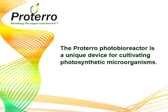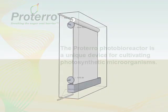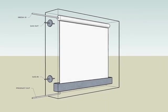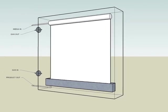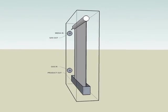The Protero Photobioreactor is a unique device for cultivating photosynthetic microorganisms. The system is protected by a transparent reactor body that provides structural support and environmental isolation for the growth surface.